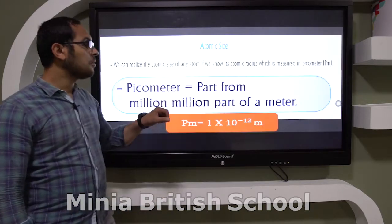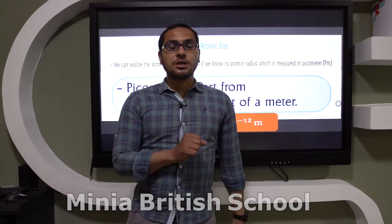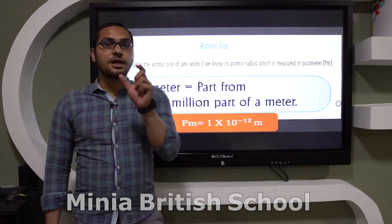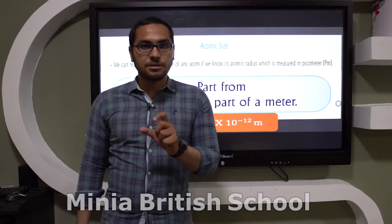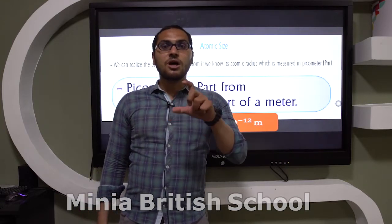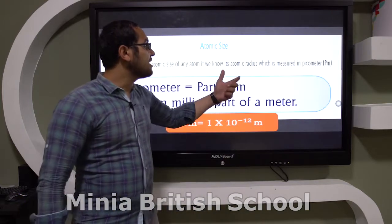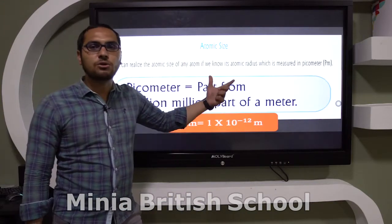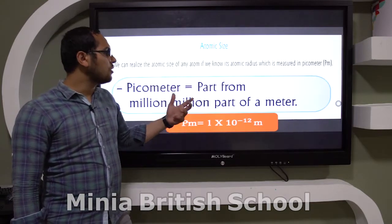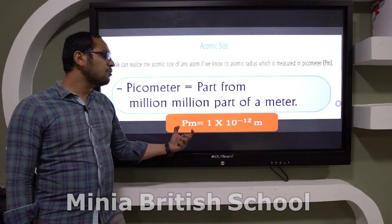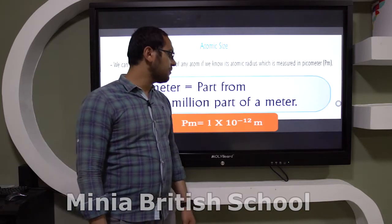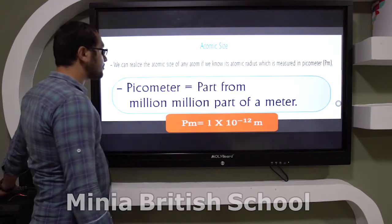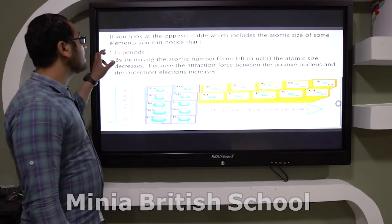Before that, you must know the meaning of atomic size. If you want to determine the atomic size of any element, you must know the atomic radius, which is measured by picometer. Picometer is one part from a million million part of a meter — that means picometer equals 1 × 10⁻¹² meter. This is a very, very small tiny unit.